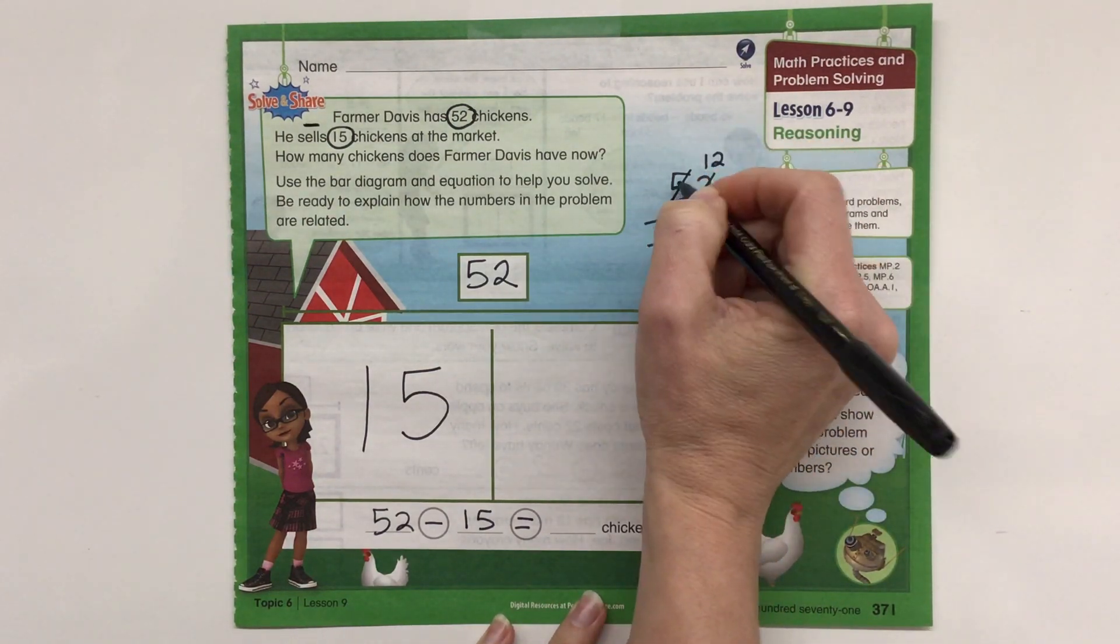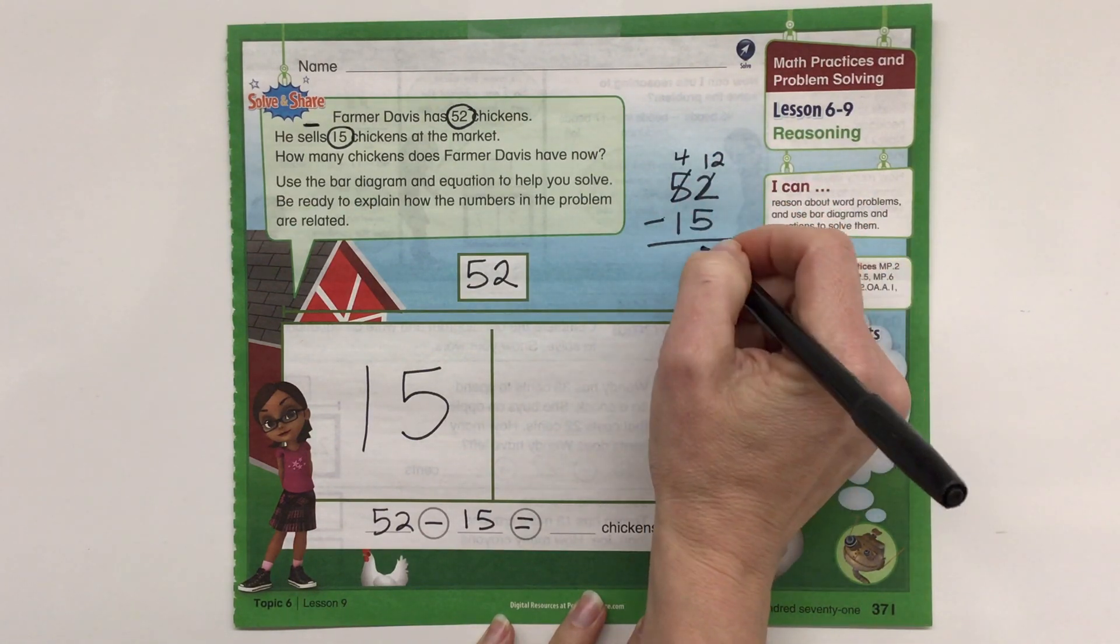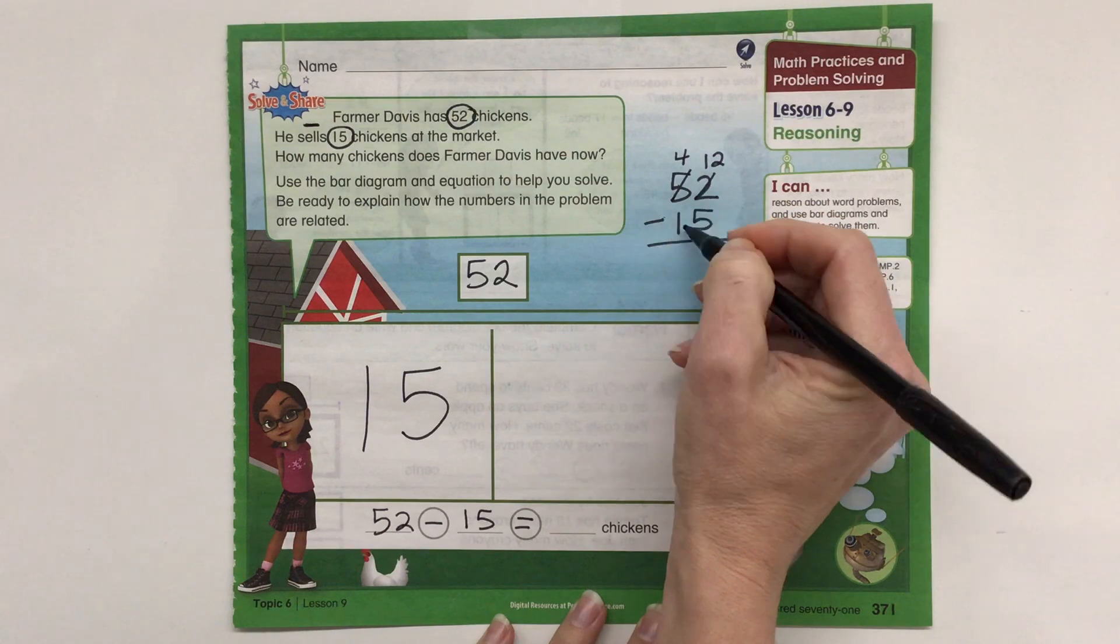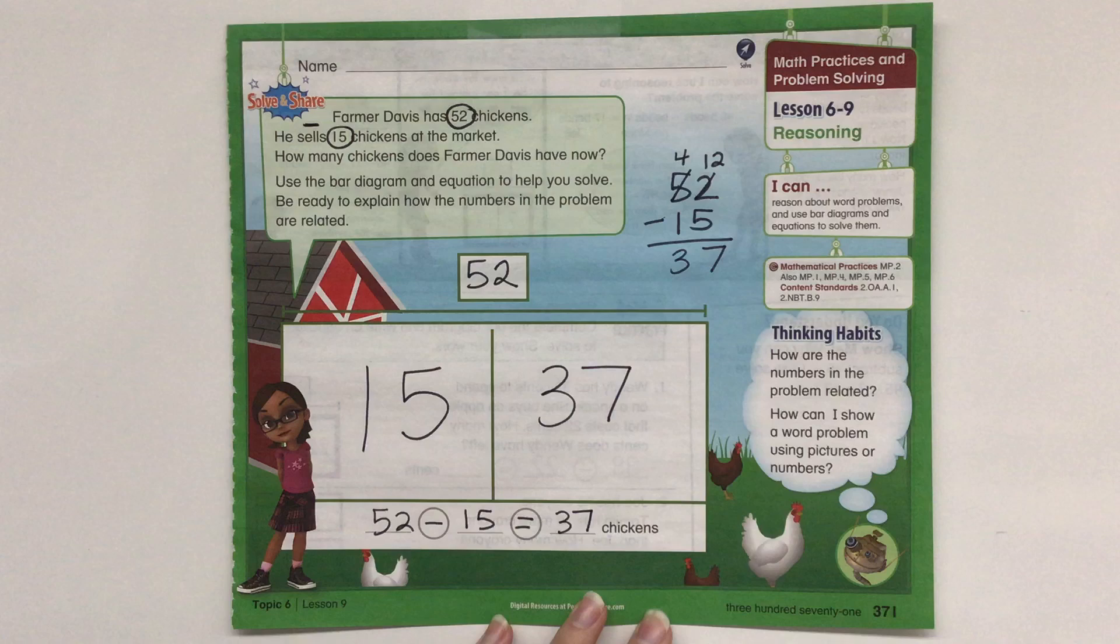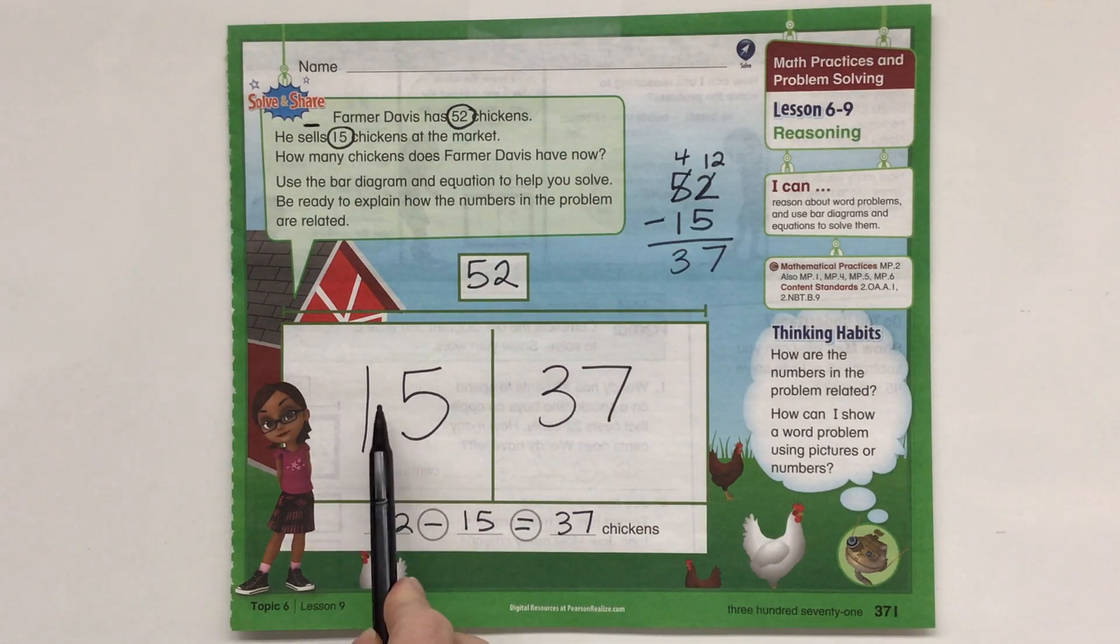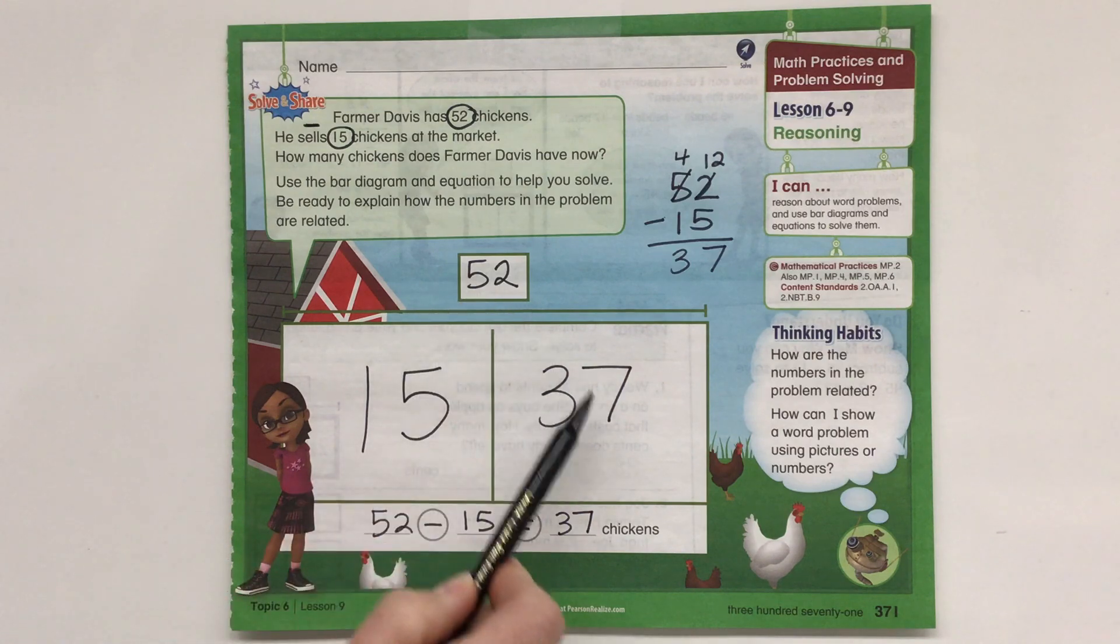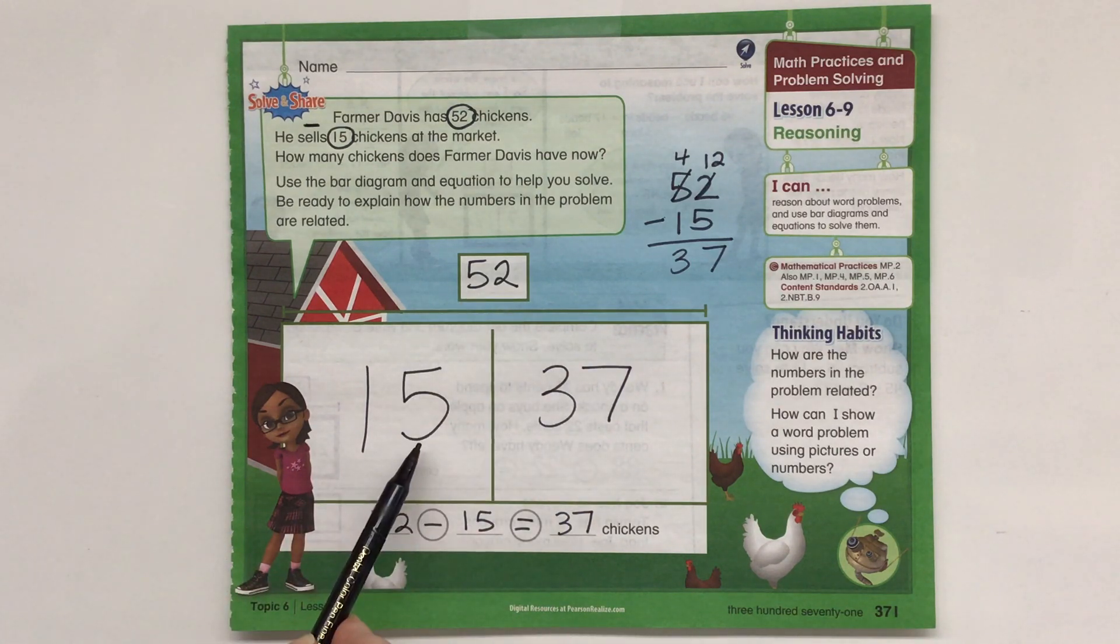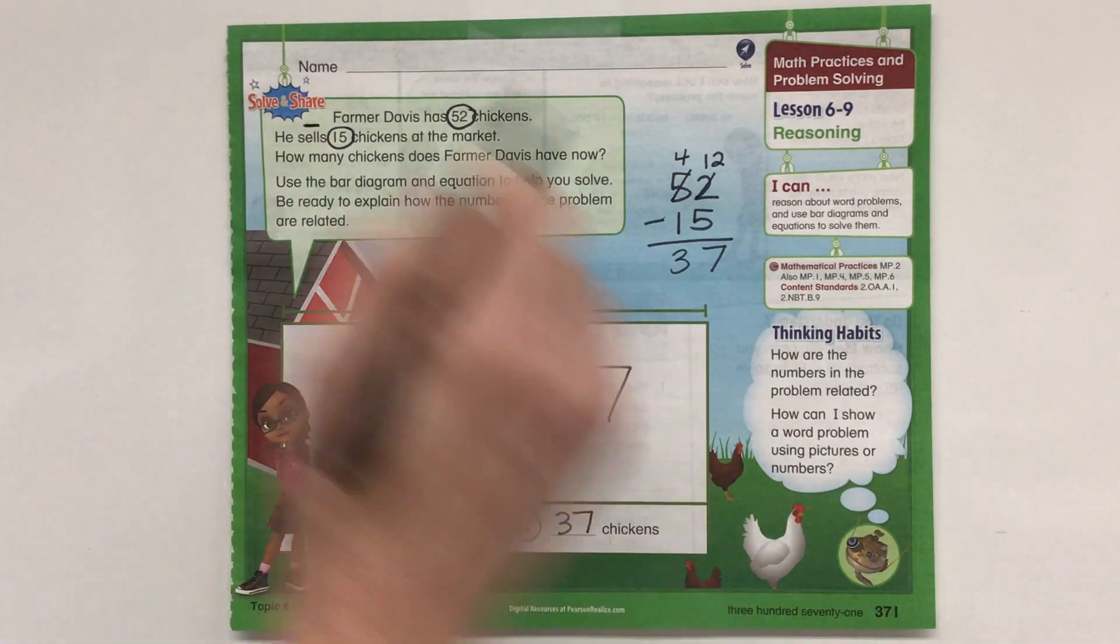That 2 becomes a 12. That 5 becomes a 4. 12 minus 5 is 7. 4 minus 1 is 3. So there are 37 chickens. And we can tell here 15 plus 37 equals 52, 52 minus 37 equals 15, 52 minus 15 equals 37. So we can see how they all work together in a fact family.